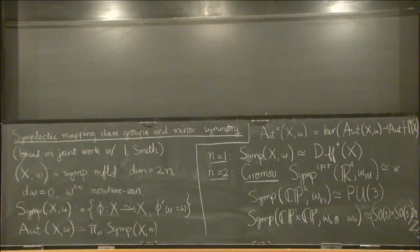If we have CP1 cross CP1 with a direct sum of symplectic forms of the same area on the two factors, you also get a perfectly sensible answer. We get rotations on the first factor, cross rotations on the second factor, semi-direct product with the involution that swaps the two factors.